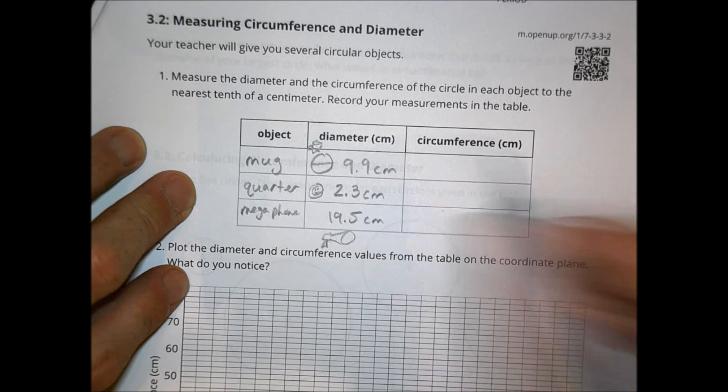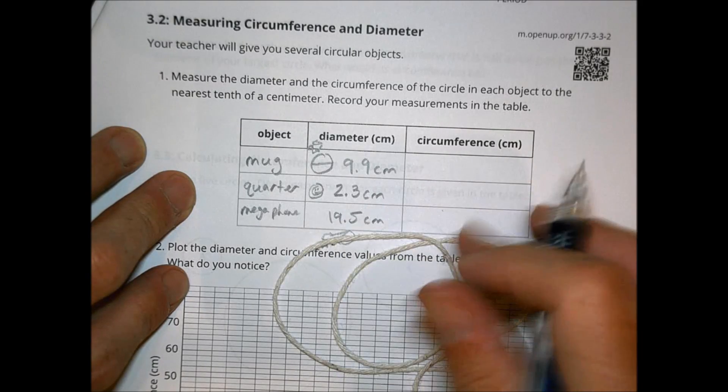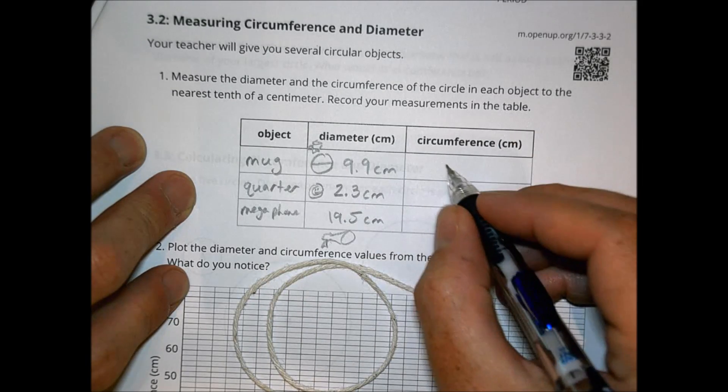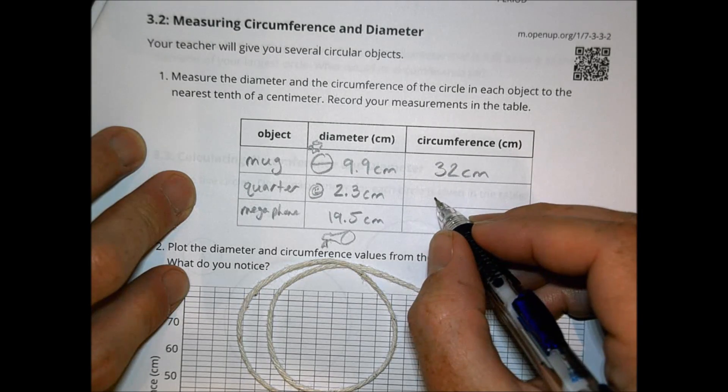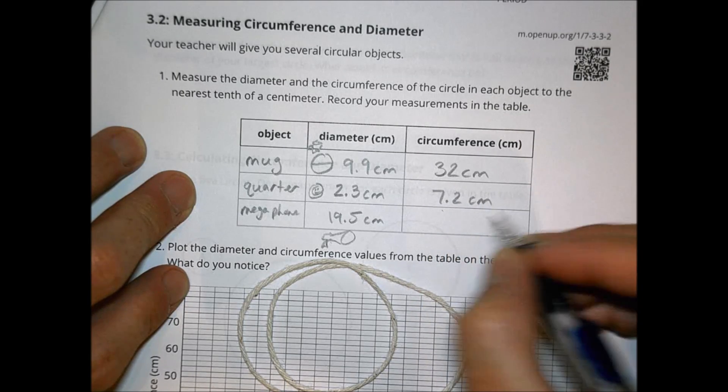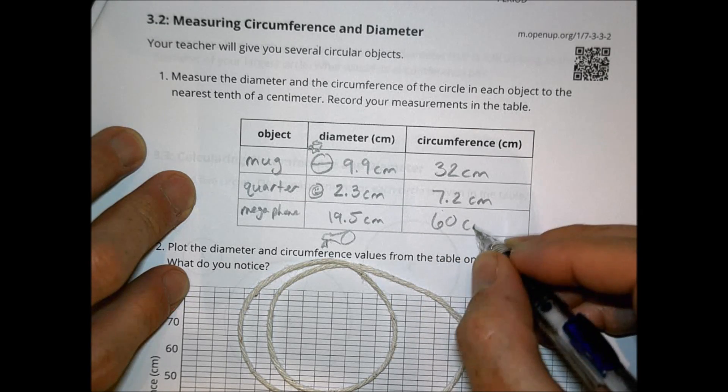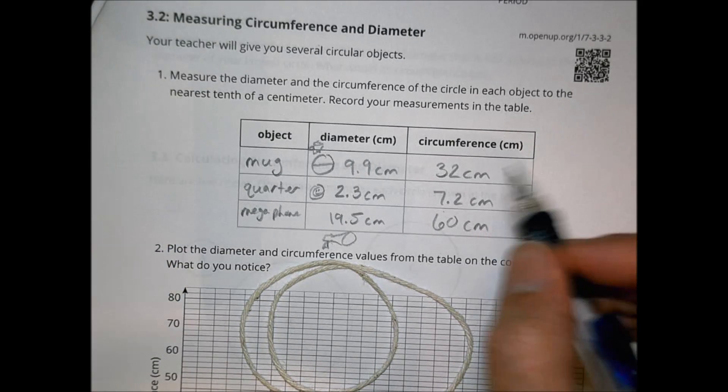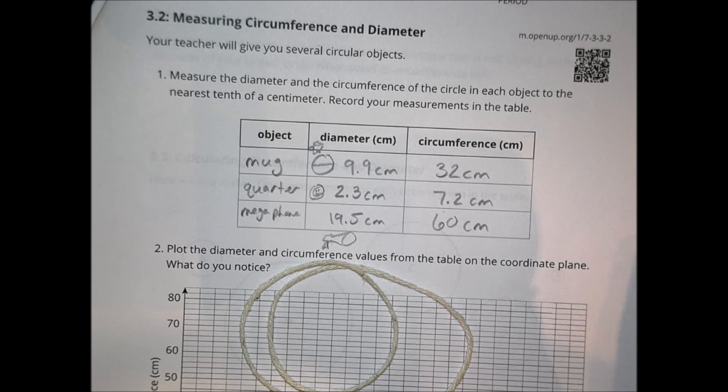To measure the circumference, I just used string and took a string and measured around each object and got an approximate value for the distance around. For the mug, it was approximately 32 cm around. For the quarter, I got about 7.2 cm for the circumference. And for the megaphone, I ended up with about 60 cm around that object there. That was my diameter and circumference for the three objects that I did.